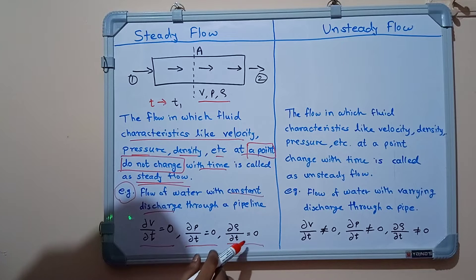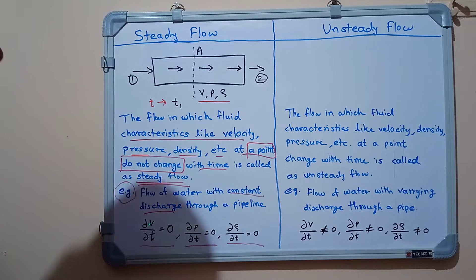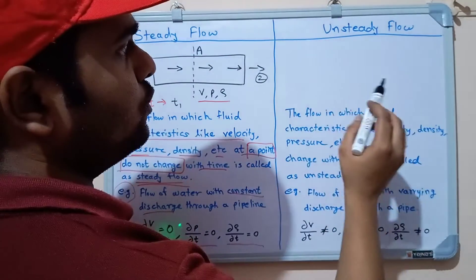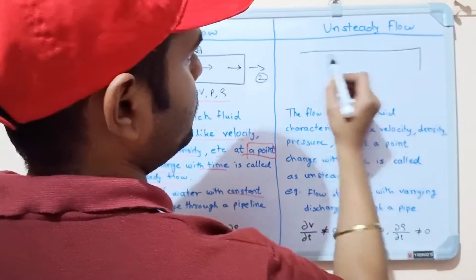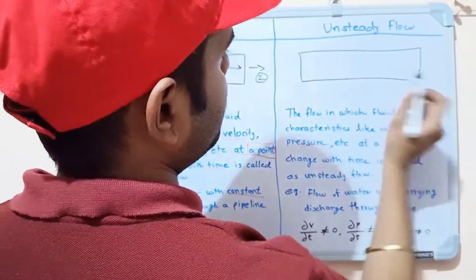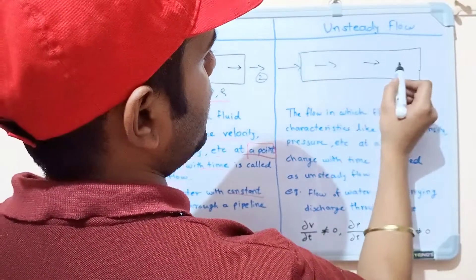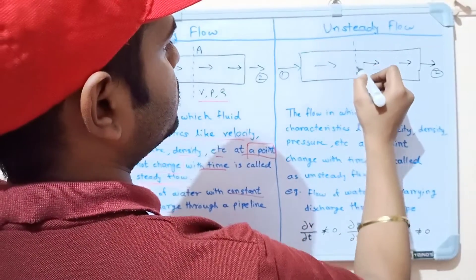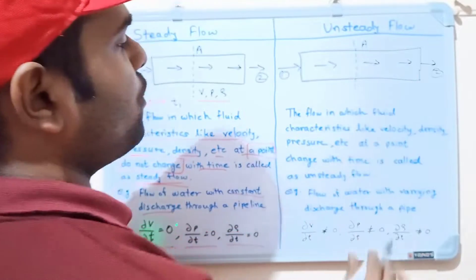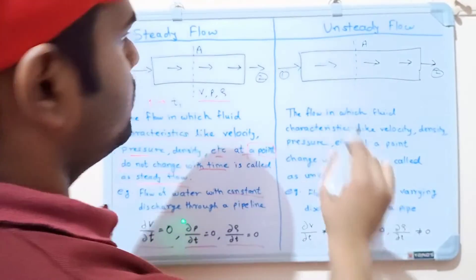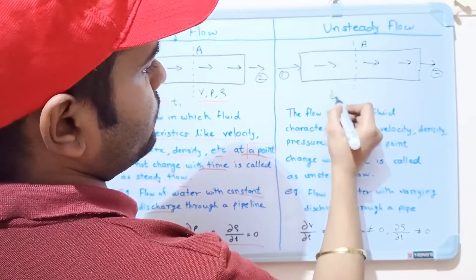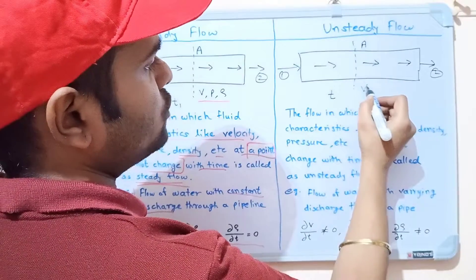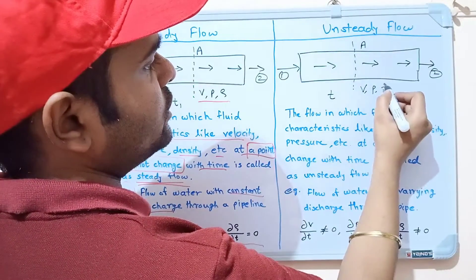Now let's look at unsteady flow. Suppose this is a pipe, and in this pipe fluid is also flowing from point one to point two. Suppose this is a section or point A. At this point, at time t, there are some fluid characteristics like velocity V, pressure P, and density rho.